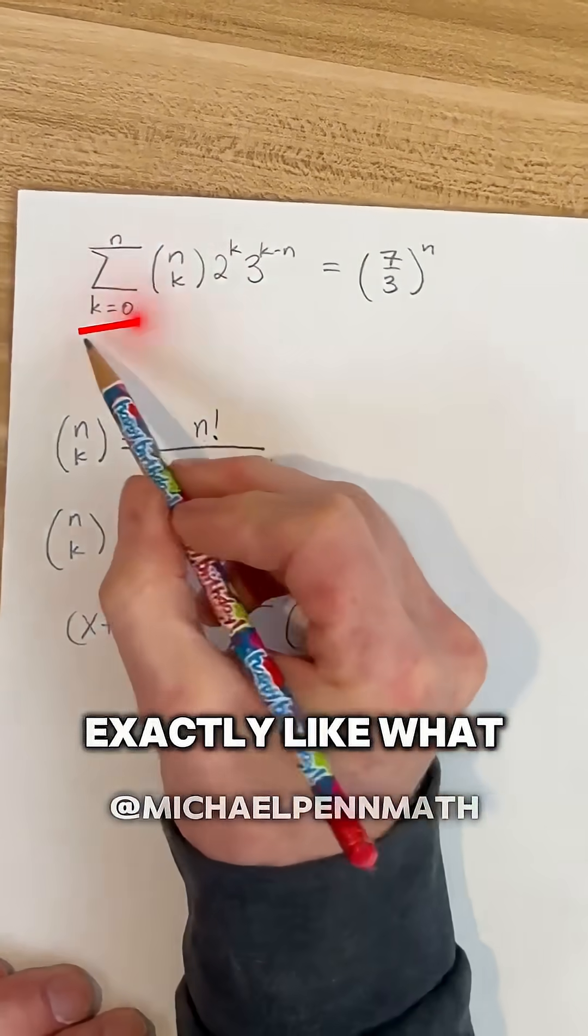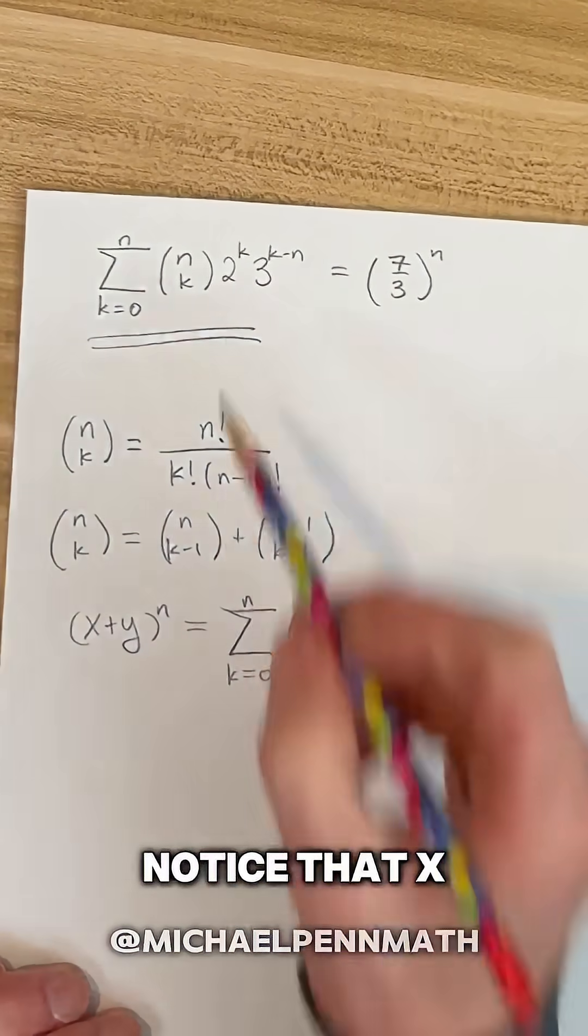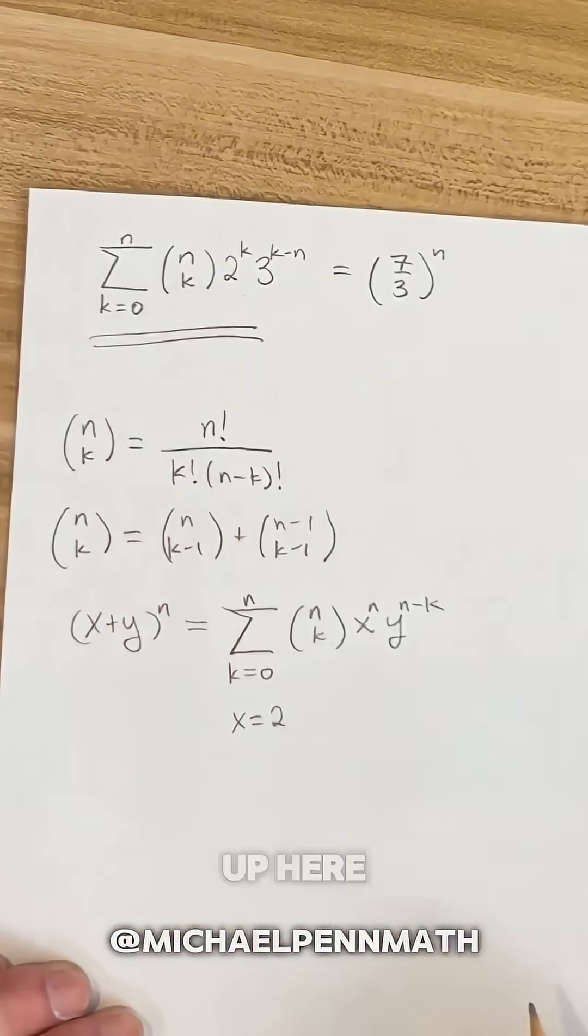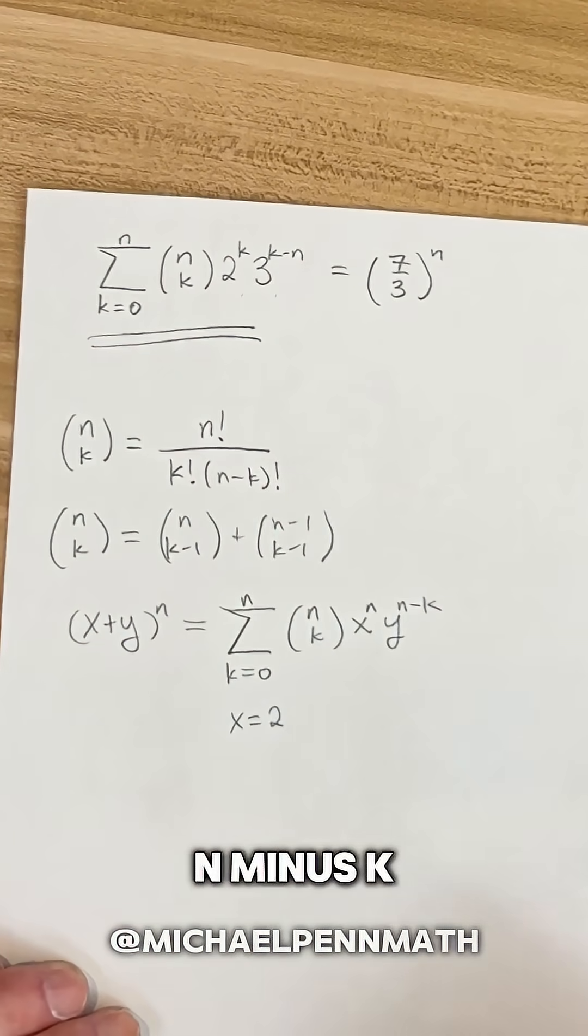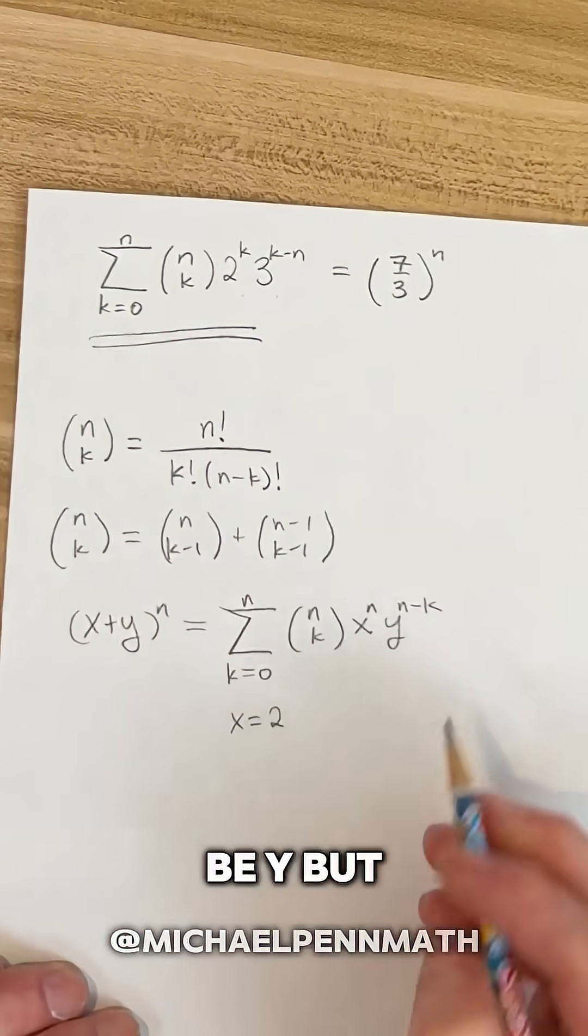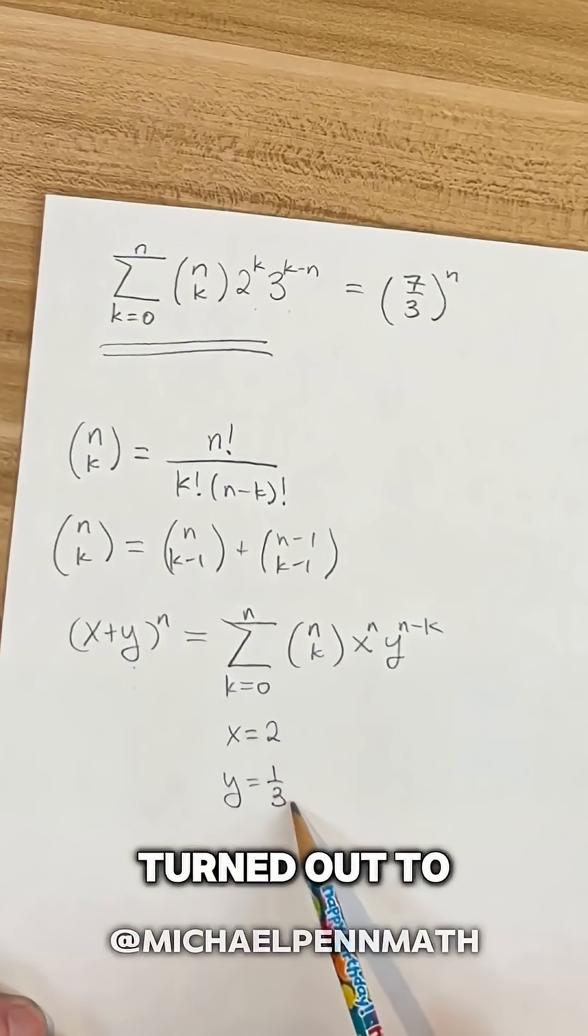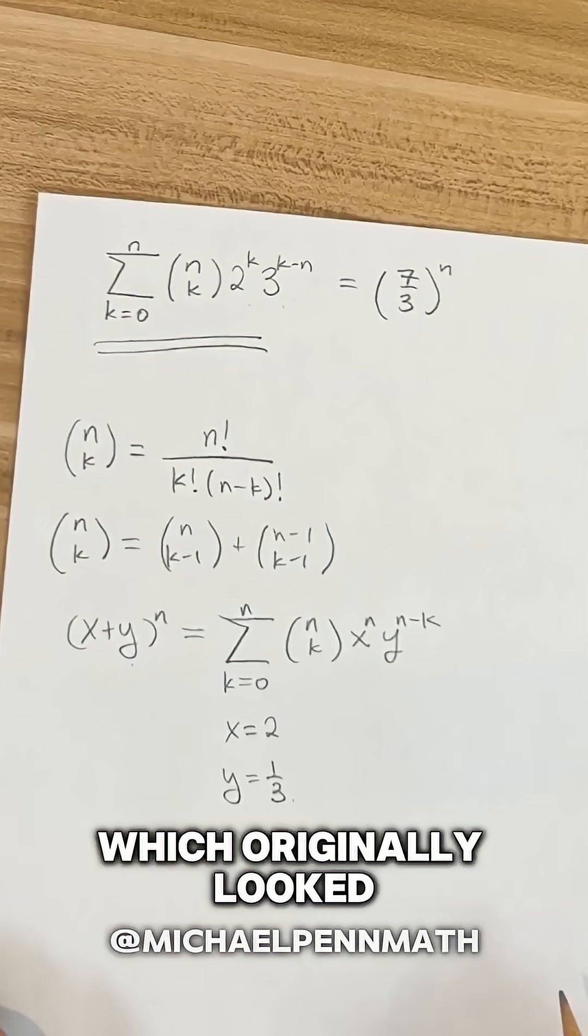That almost looks exactly like what we have over here on the left hand side. Notice that x will be 2 in this problem up here, and then here we have 3 to the k minus n. Here we have y to the n minus k. 3 will not be y, but the third thing that we wrote down turned out to provide us a path for solving our problem, which originally looked intractable.